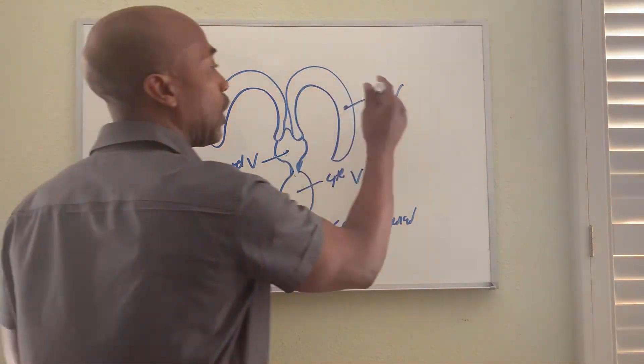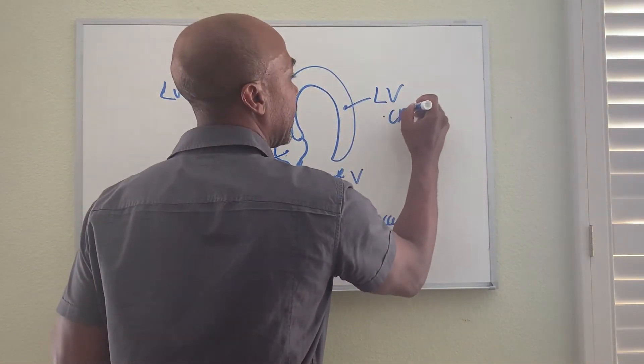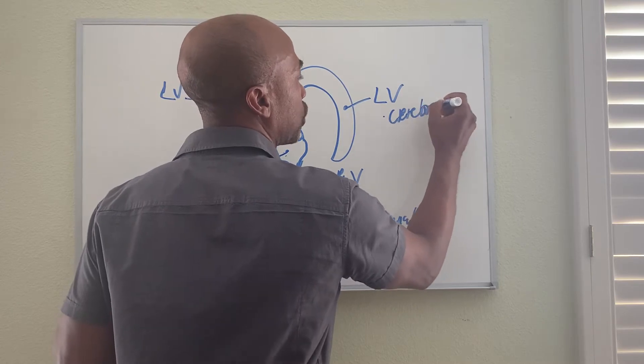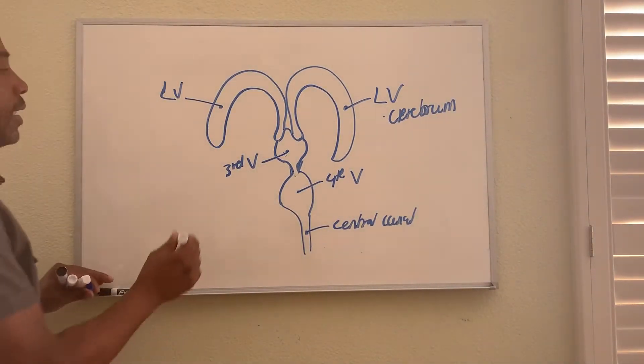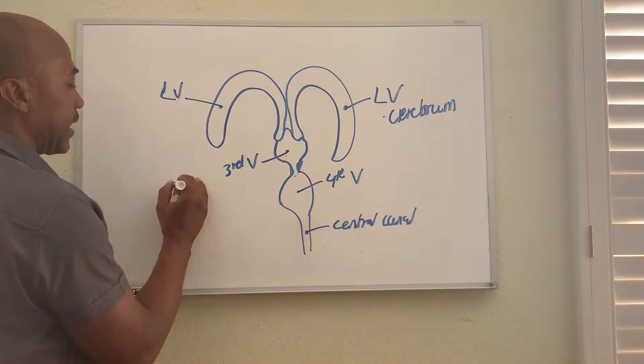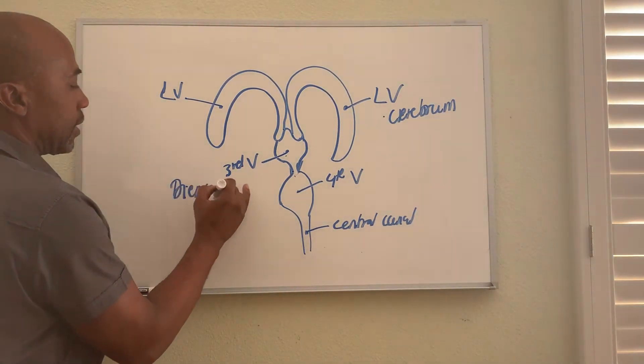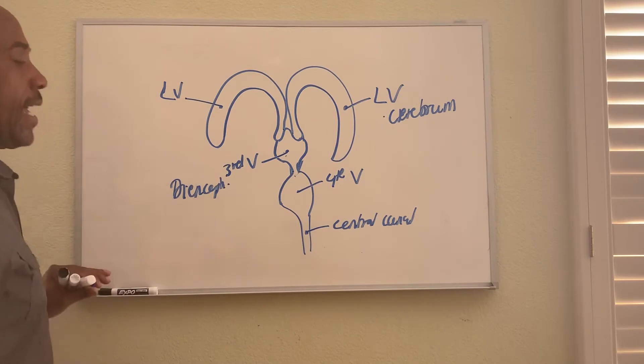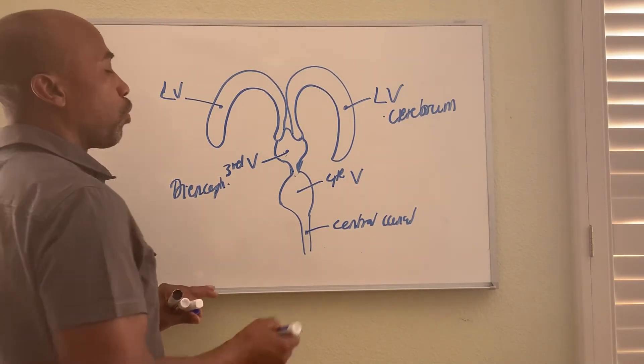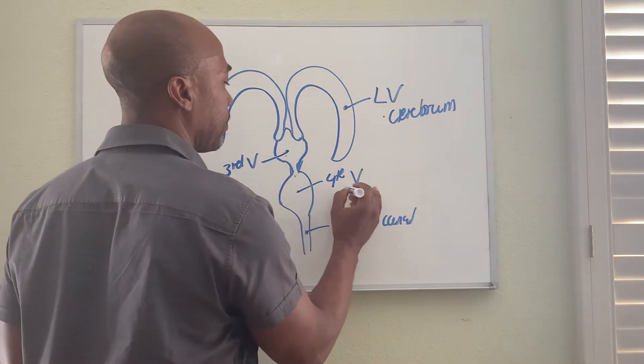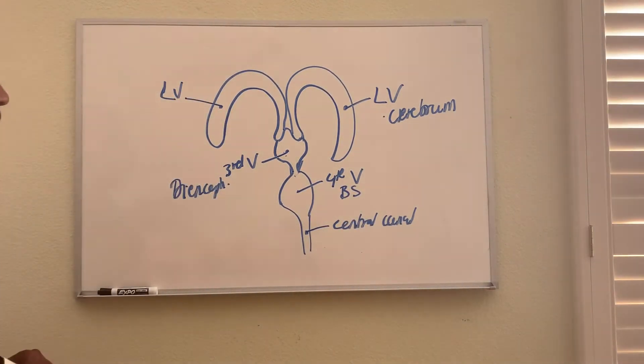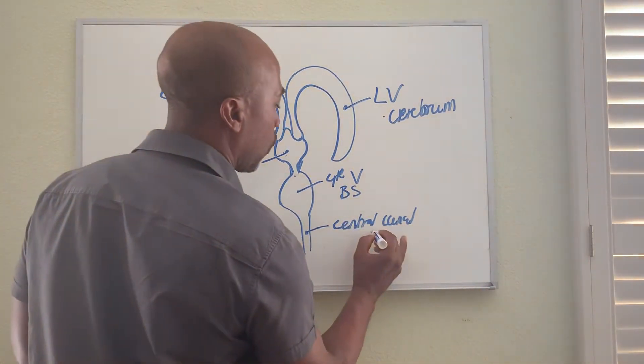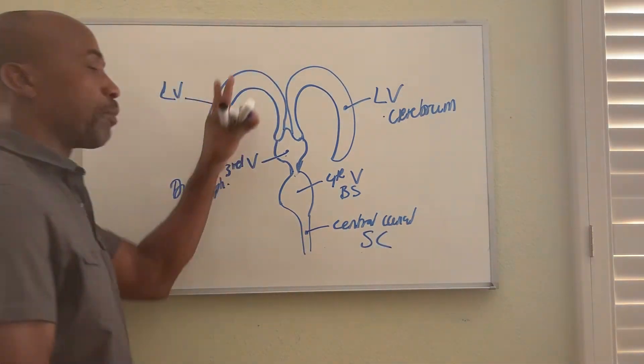The ventricles are found in the cerebral hemispheres, in your cerebrum. Your third ventricle runs in the middle of your diencephalon, and the fourth ventricle runs along the brainstem. The central canal runs through the spinal cord. That's where you find these particular holes inside the brain.